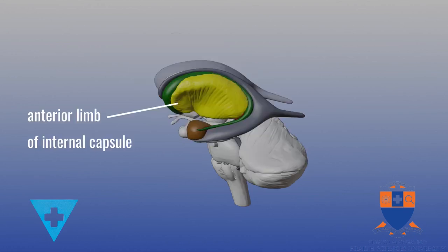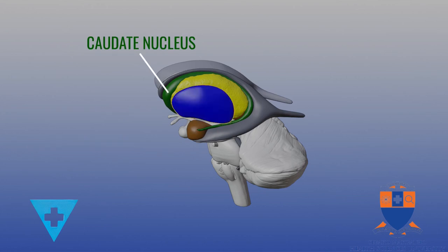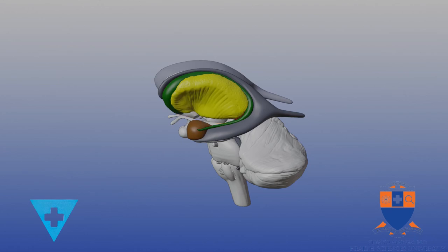The anterior limb of the internal capsule separates the caudate and the lentiform nuclei. However, its most rostral section comprises the corpus striatum with the lentiform nucleus putamen.